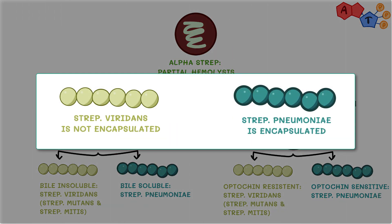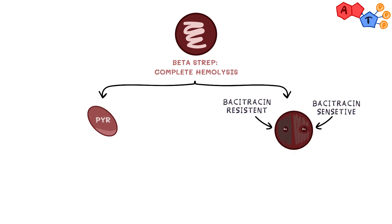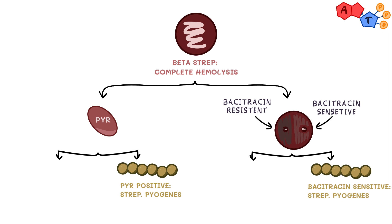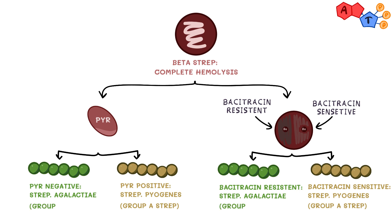In addition to that, Streptococcus pneumoniae is encapsulated, whereas the viridans group is not. For the beta group, we can depend on bacitracin sensitivity and the presence of pyrrolidonyl aminopeptidase enzyme, PYR for short, to divide them. Streptococcus pyogenes is positive for both, meaning it's sensitive to bacitracin and has PYR enzyme, whereas Streptococcus agalactiae is resistant to bacitracin and lacks PYR enzyme. Note that we can also refer to Streptococcus pyogenes as group A strep and Streptococcus agalactiae as group B strep.